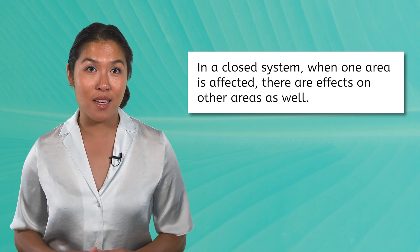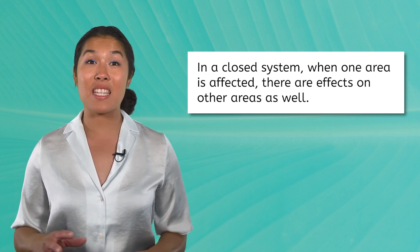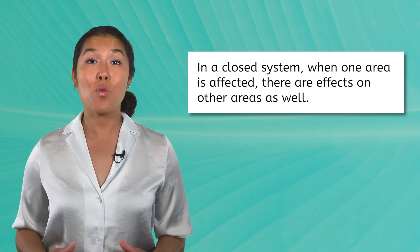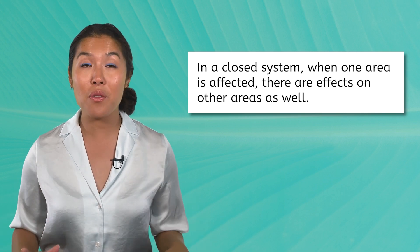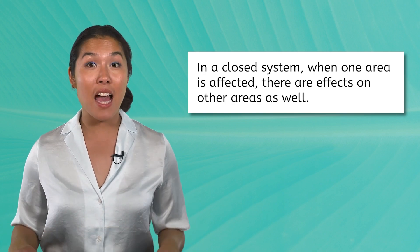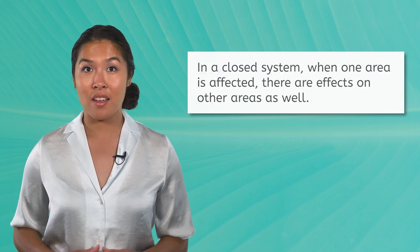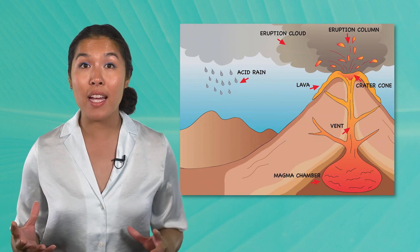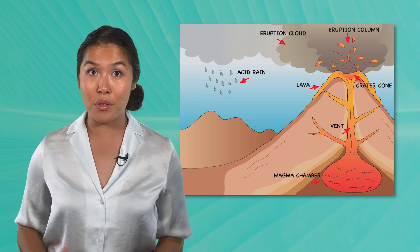There is another aspect of being a closed system that can have a large effect on the biosphere. As a closed system, when one area of Earth is affected, either negatively or positively, it will have an effect on other areas of the Earth. Nothing happens in isolation. For example, the particles from volcanic eruptions can cause acid rain in other parts of the world.